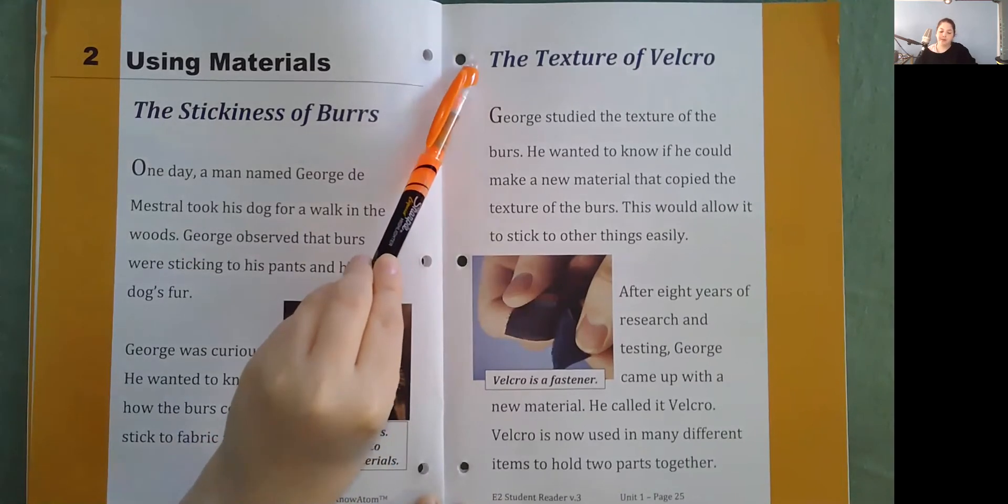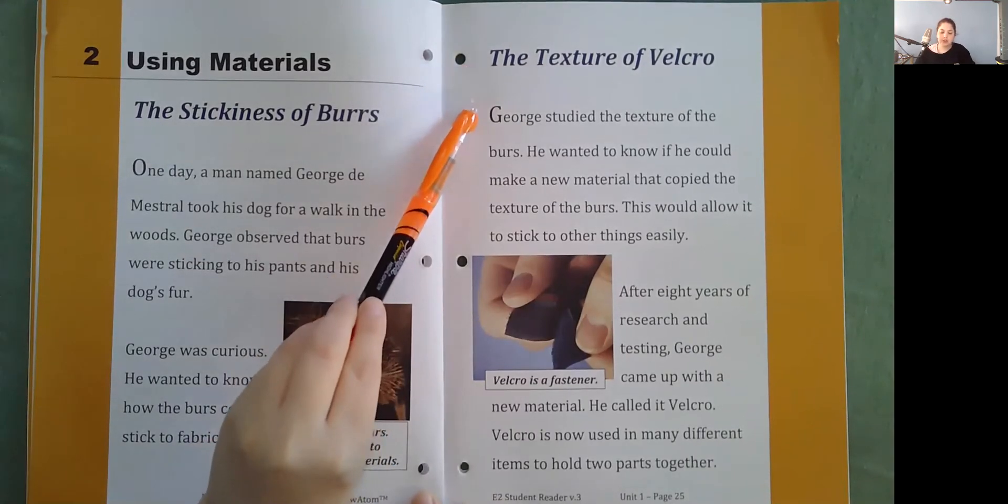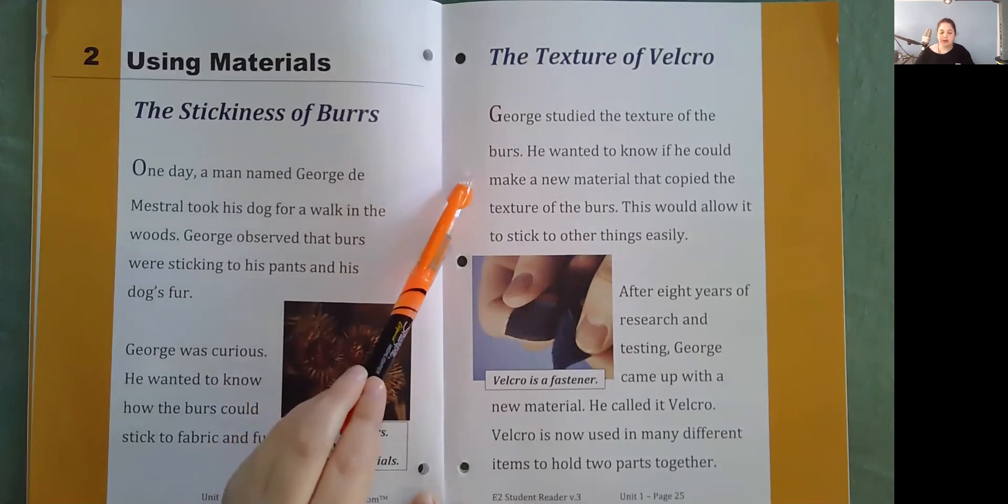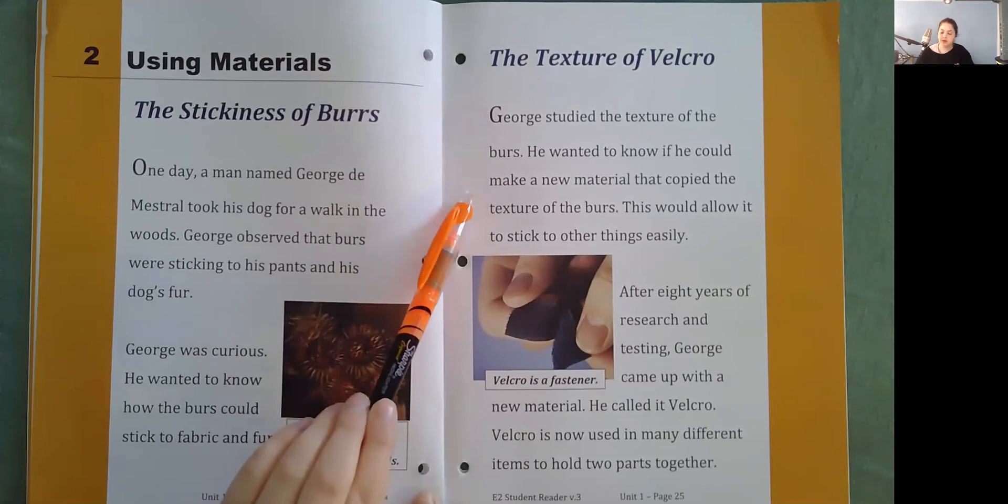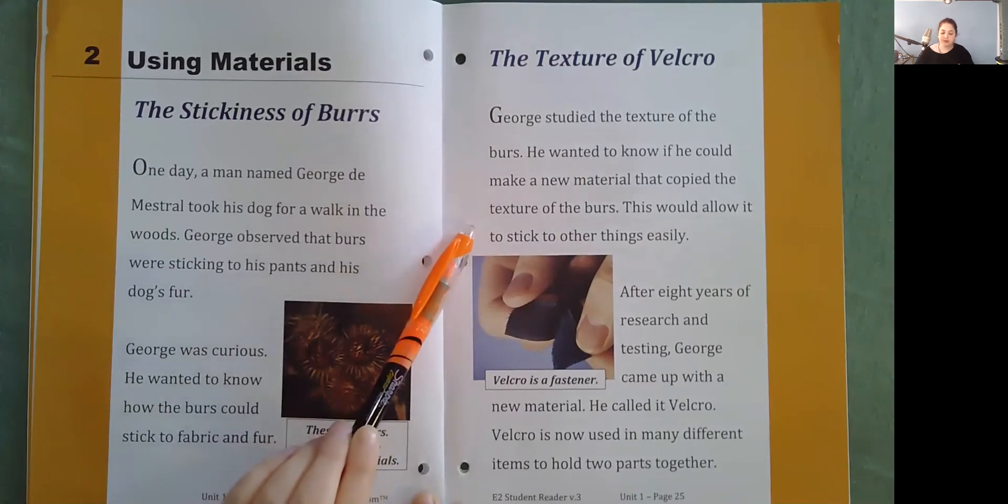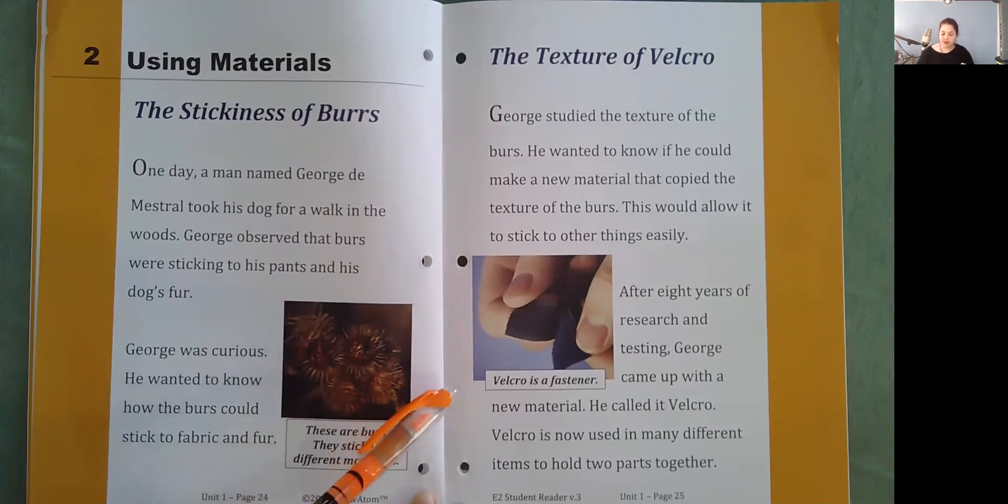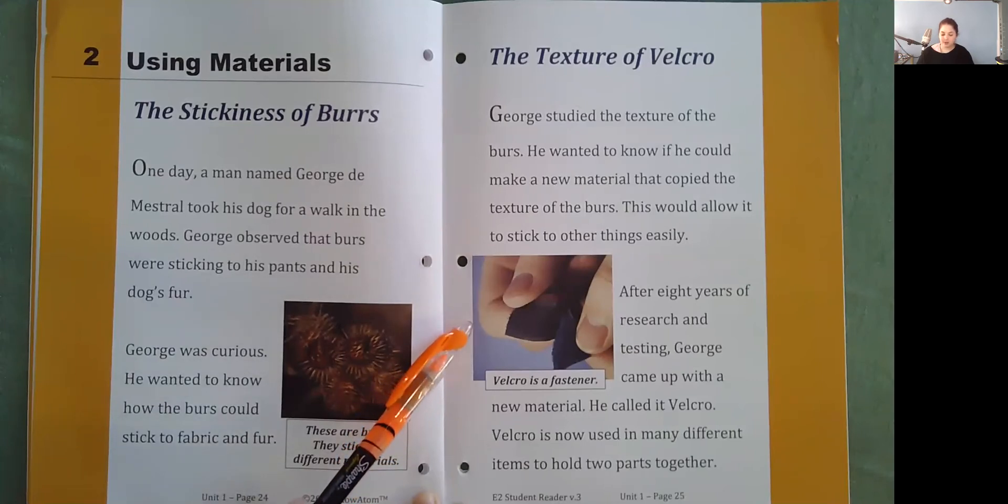The texture of Velcro. George studied the texture of the burrs. He wanted to know if he could make a new material that copied the texture of the burrs. This would allow it to stick to other things easily. After eight years of research and testing, George came up with a new material. He called it Velcro. Velcro is now used in many different items to hold two parts together. Velcro is a fastener.